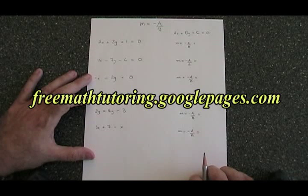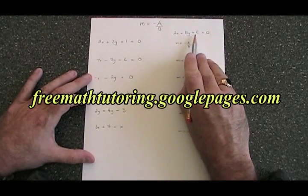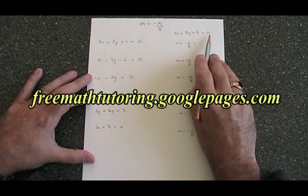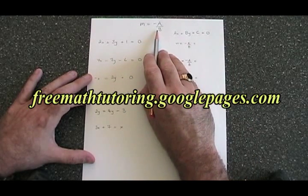If we have a straight line whose equation is in the form ax plus by plus c equals 0, then we can use a simple formula, negative a over b, to find our slope m.